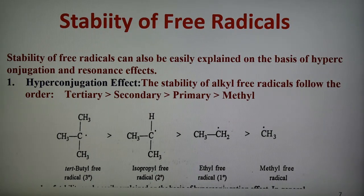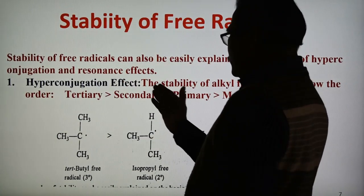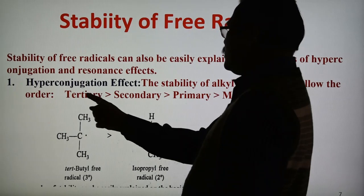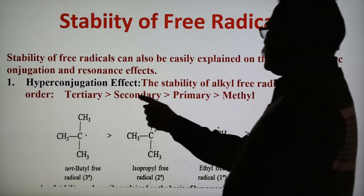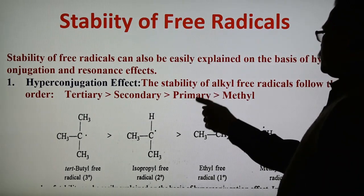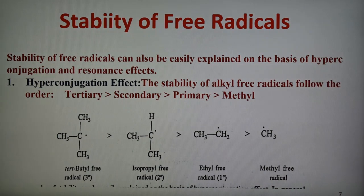On the basis of the hyperconjugation effect, the stability of alkyl free radicals follows an order: tertiary is more stable than secondary, which is more stable than primary, which is more stable than methyl. Again, this order is similar to the order found in case of the Carbonium ion.